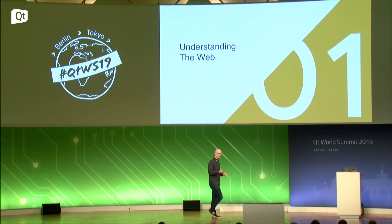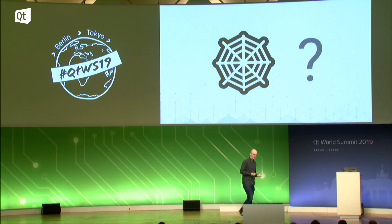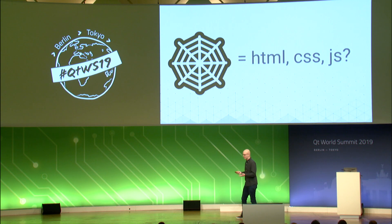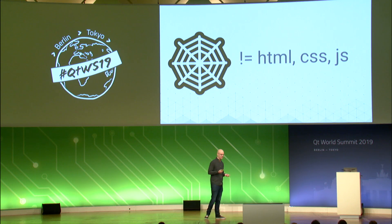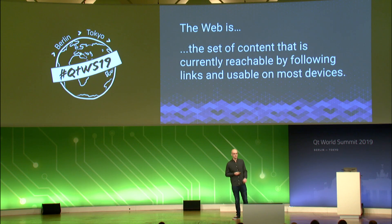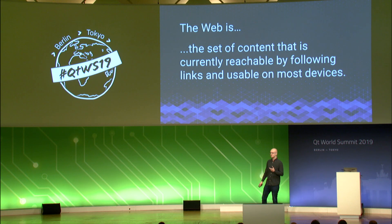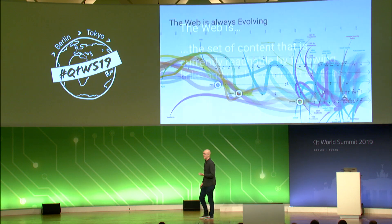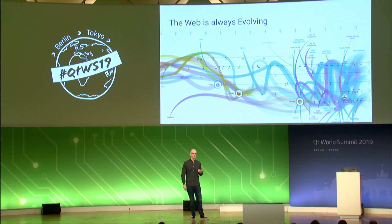So let's try to understand the web as a platform. We all have an understanding that it's something you access through the browser and that it has something to do with HTML, CSS, and JavaScript. But the web isn't really just those technologies. The best definition I have is that the web is the set of content currently reachable by following links and usable on most devices. And that definition doesn't have any specific technology in it, because the web is always evolving and changing as a platform.